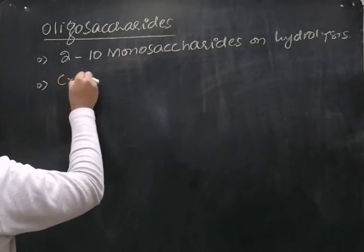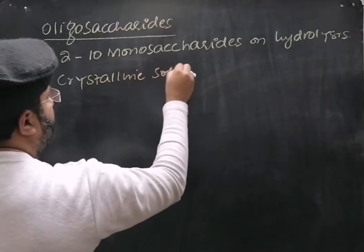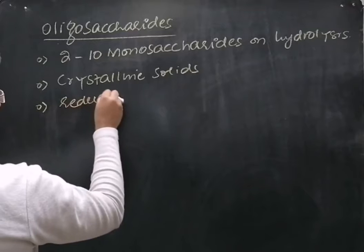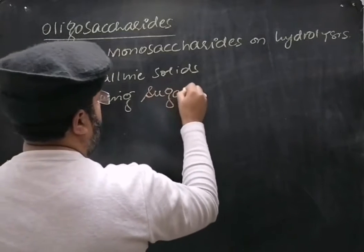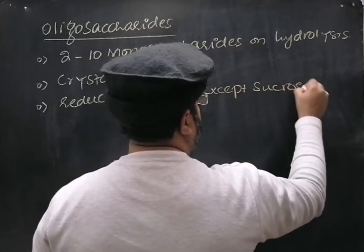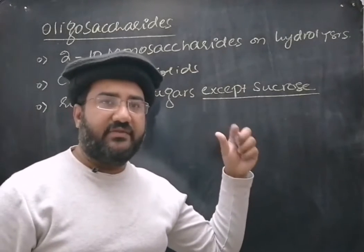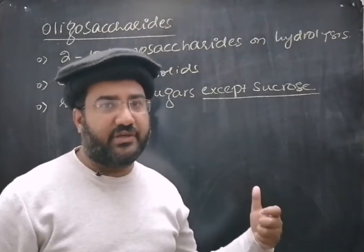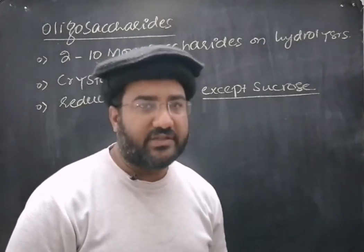Oligosaccharides are crystalline solids. They are also reducing sugars, except sucrose. That is a very important point — oligosaccharides are also reducing sugars except sucrose, because in the case of sucrose, the hemiacetal and hemiketal groups are not free to show the reducing properties.